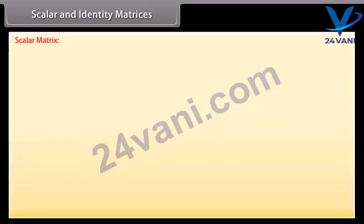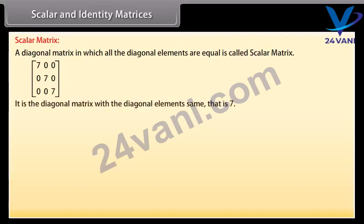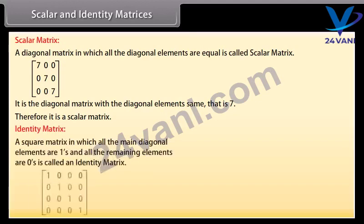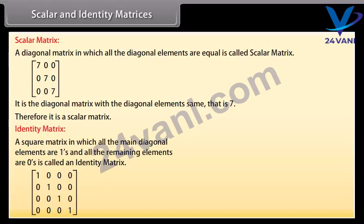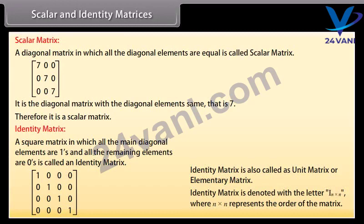Scalar matrix: a diagonal matrix in which all the diagonal elements are equal is called a scalar matrix. Look at this matrix — it is a diagonal matrix with the diagonal elements all the same, that is, 7. Therefore, it is a scalar matrix. Identity matrix: a square matrix in which all the main diagonal elements are ones and all the remaining elements are zeros is called an identity matrix. It is also called a unit matrix or elementary matrix, and is denoted I_n where n by n represents the order of the matrix.